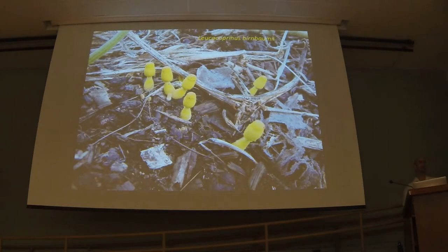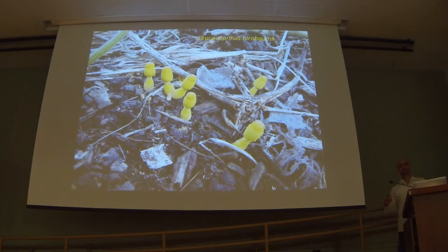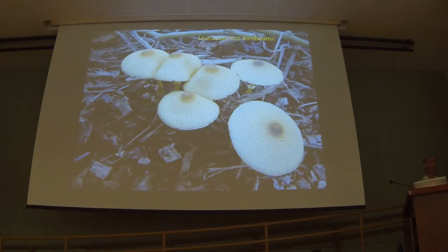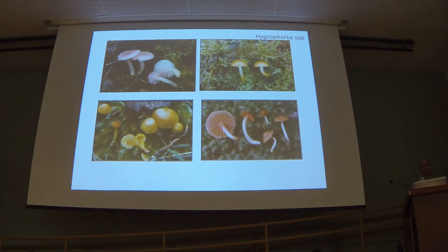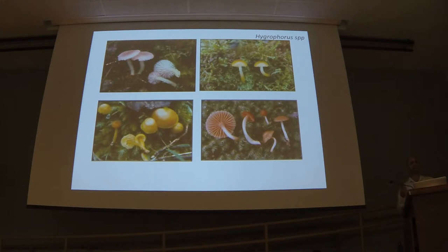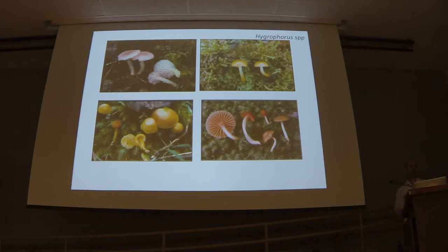Here are some fungi you're likely to see. Many of you have probably seen Leucocoprinus birnbaumii — it's bright yellow, a really common flower pot contaminant. If you have something growing in your palm tree flower pot or your auntie's geraniums, it's probably this one. It's not native and is commonly associated with imported soil. Don't eat it — that's a good theme for this whole talk. A lot of our potentially native diversity is in a group called hygrophorous species, typically growing in mosses or liverworts in very wet environments like bogs or the backs of valleys. They tend to be shiny, colorful, and sort of slippery.